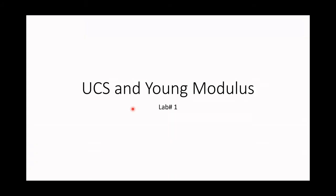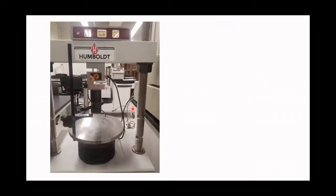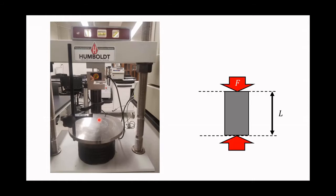Hello everybody. Now we are going to see how we calculate the UCS and Young Modulus using cylindrical cores. The way that we calculate these two parameters is using an axial load. We are going to place the sample in between these two sides and we are going to apply a force over the cylindrical sample.